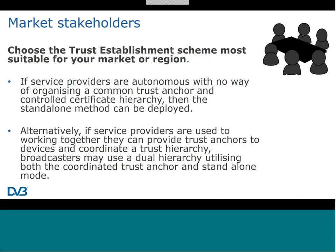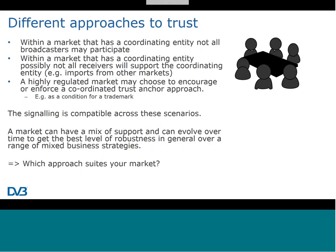Even within a market, different players may have freedom to do their own thing. Within a given market using a coordinating entity approach, not all broadcasters may participate. Similarly, some receivers may not be part of the coordinating entity's trusted root anchor — such as imports from other markets or devices introduced before the agreement. Conversely, a highly regulated market may choose to encourage a coordinated trust anchor approach, for instance organizing a trademark. The signaling is compatible, so these different approaches to trust can coexist within a given market.